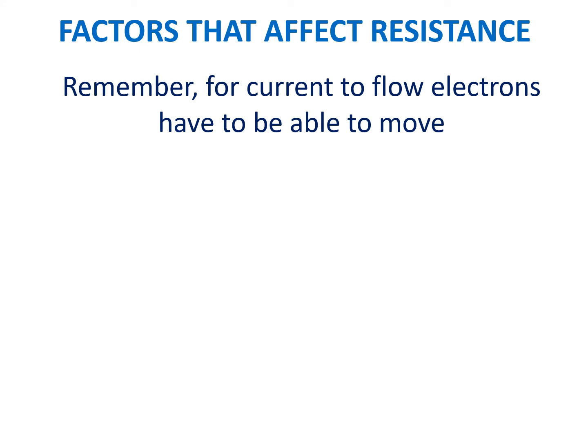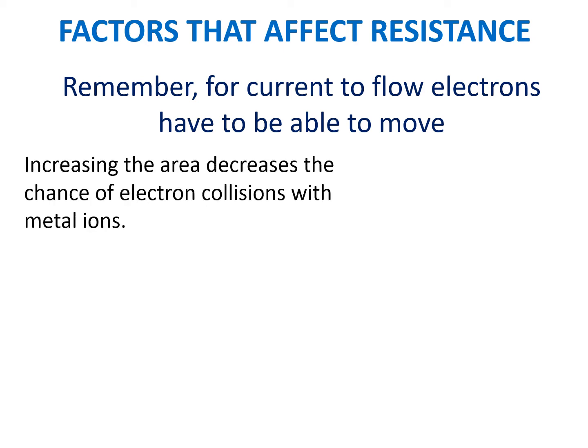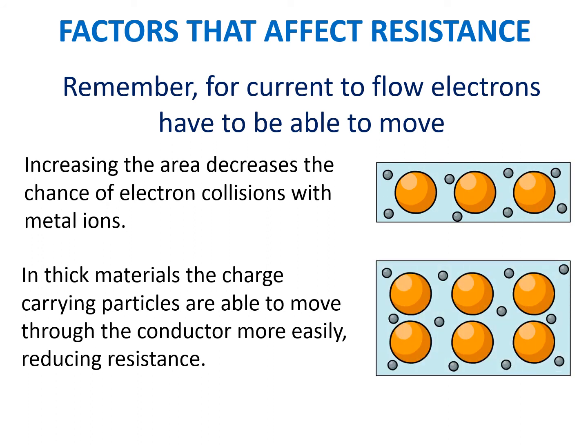For current to flow, electrons have to be able to move. Increasing the area decreases the chance of electron collisions with metal ions. In a thick material, the charge-carrying particles are able to move through the conductor more easily, which reduces the resistance. Remember, resistance increases with length because it increases the chance of electron collisions with the metal ions. So length and area do not have the same effect on the resistance of the material.